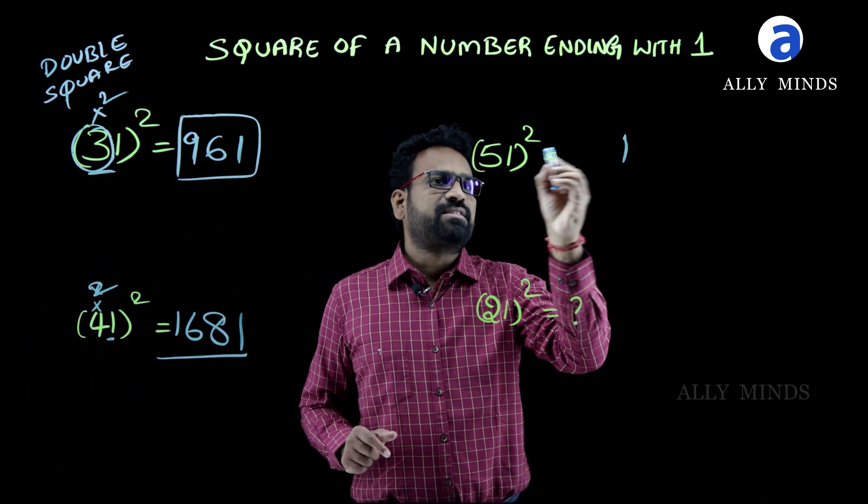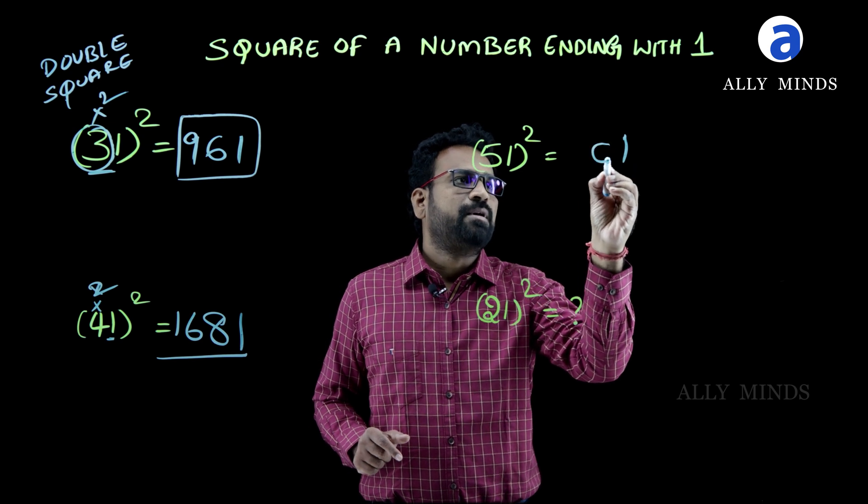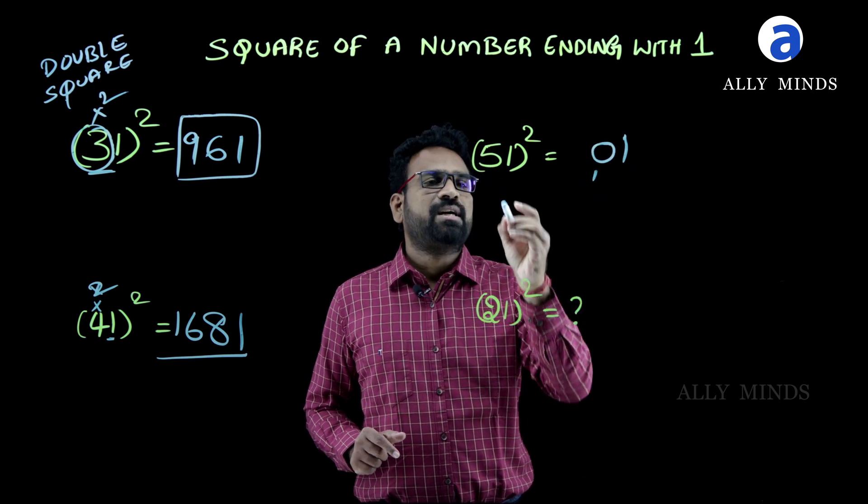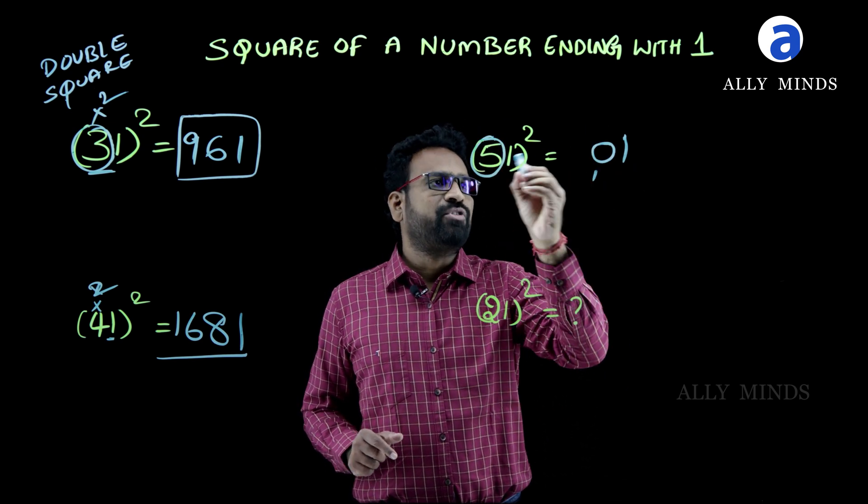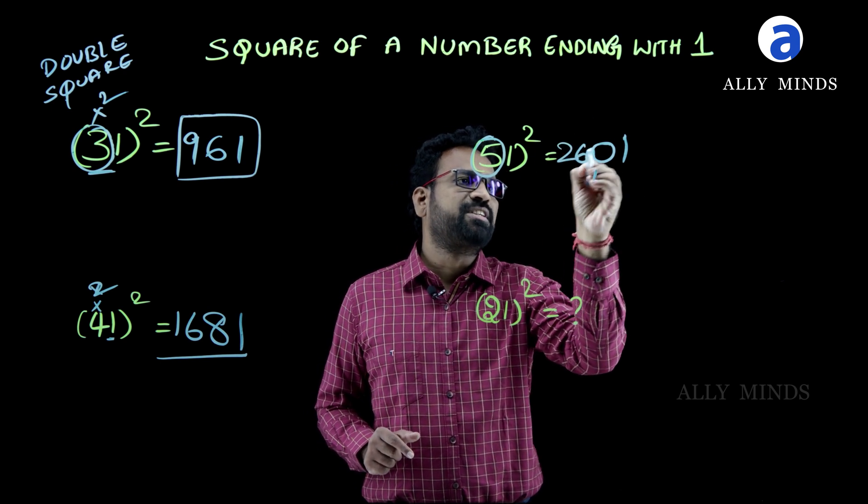Write that number. First double it, it will become 10. So, write it as 01 and square it. If we square it, it will become 25. 25 plus 1 is 26.